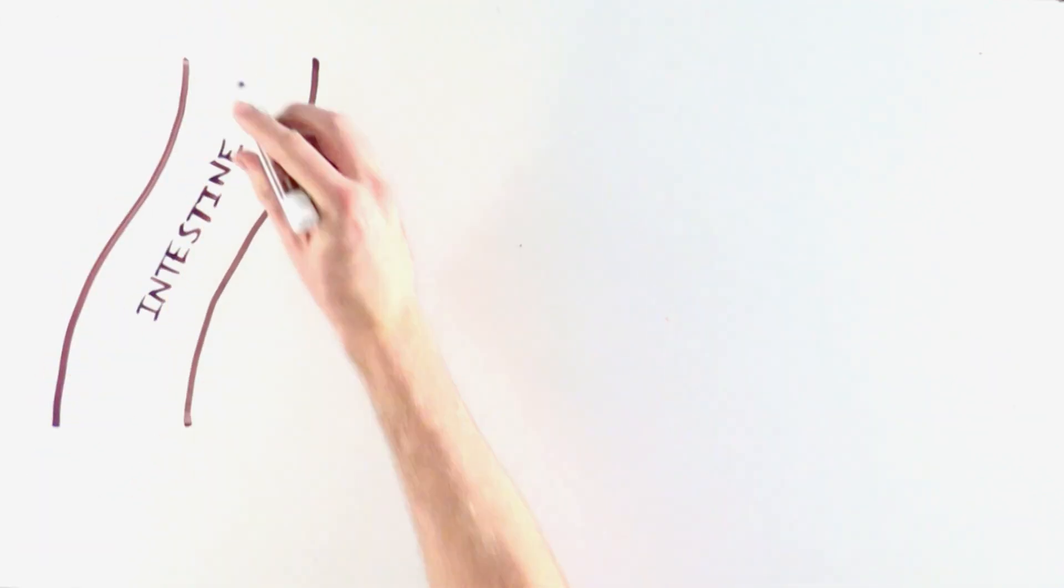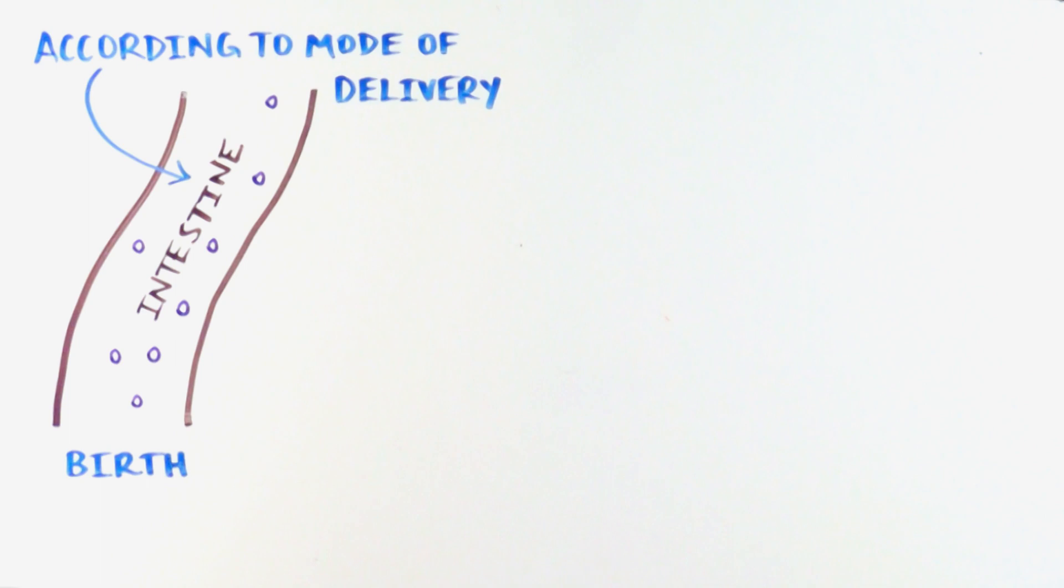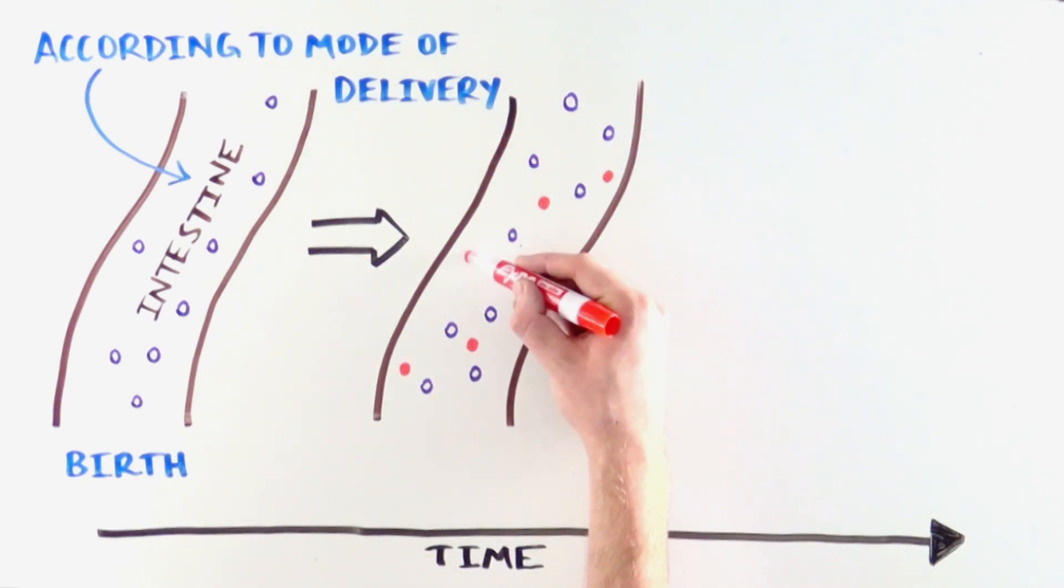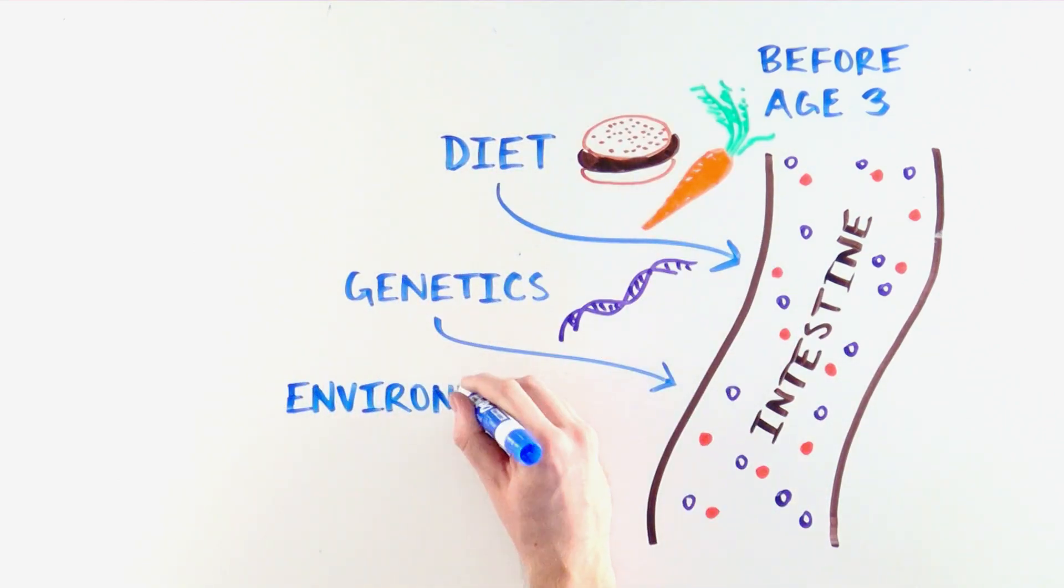At birth, the guts of newborns are sterile, and according to the mode of delivery, they are colonized by microorganisms with which the babies were first in contact. Then, the gut microbiome composition fluctuates in a dynamic process with selective pressure induced by diet, genetics, and environmental exposures.